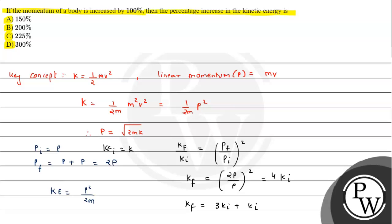Therefore k final will be equals to 3k plus k. If we look carefully, the percentage increase we need is k final minus k initial.